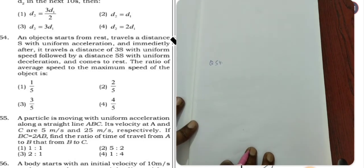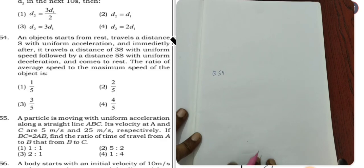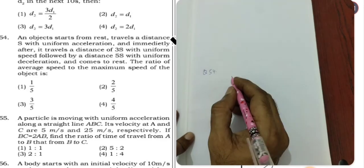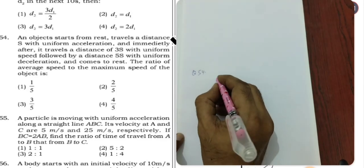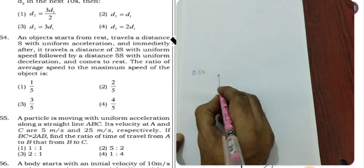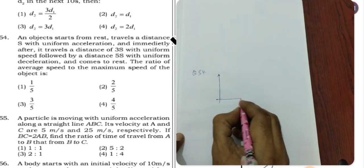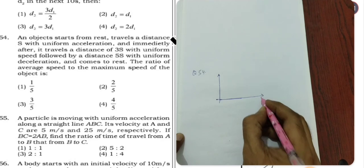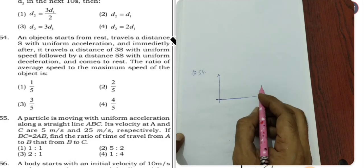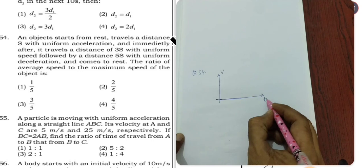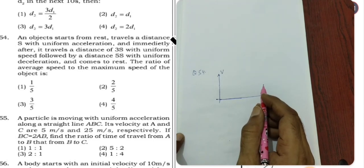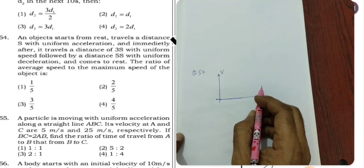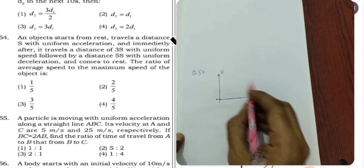An object starts from rest. So the velocity-time graph, the area which we see is the distance or displacement. So here this distance traveled is with constant acceleration.